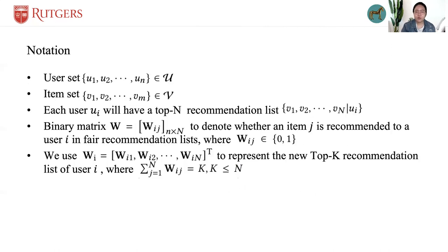In order to address the unfairness concerns presented above, we provide a framework to generate fair recommendation lists for different user groups. We first introduce the notations used in this paper. In the problem of recommendation, suppose there are a user set and an item set.